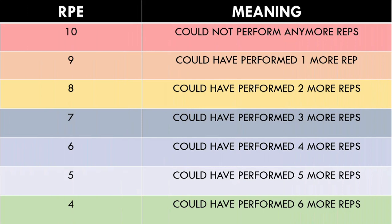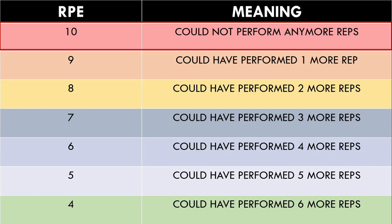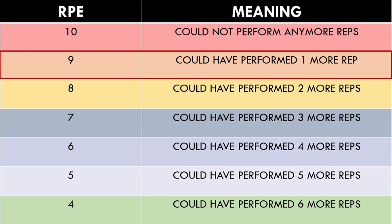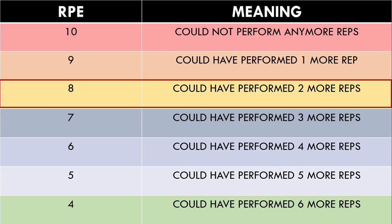In the context of strength training, the system works with the athlete scoring a given set a number from 1 to 10 after the set is complete. The RPE given is based on how many more reps they could have performed before complete failure. An RPE of 10 means no more reps could have been performed. An RPE of 9 means one more rep could have been performed before failure. An RPE of 8 means two more reps could have been performed before failure, and so on.